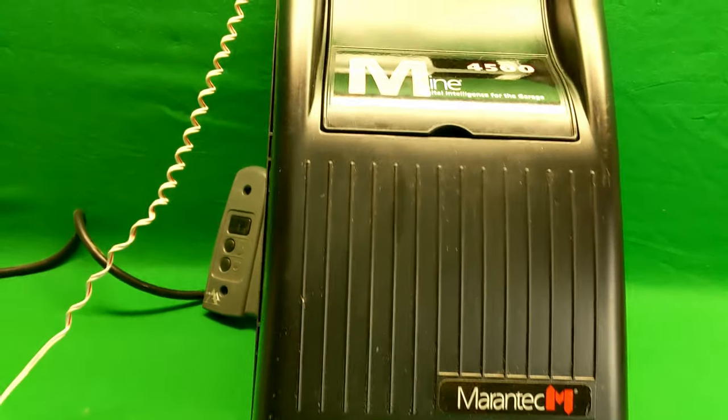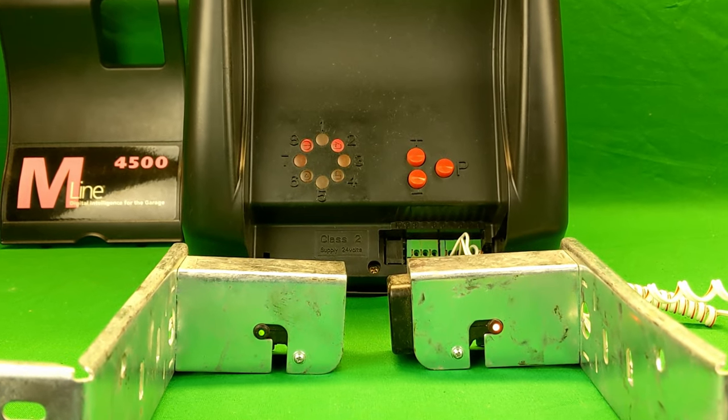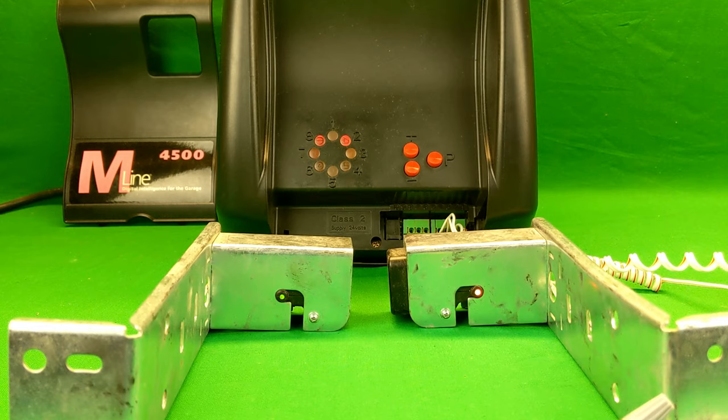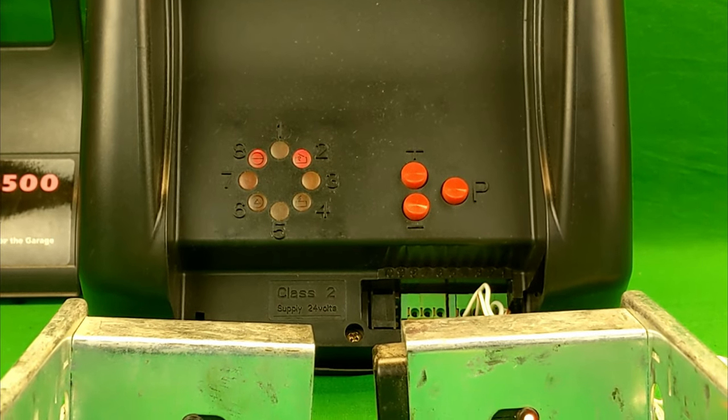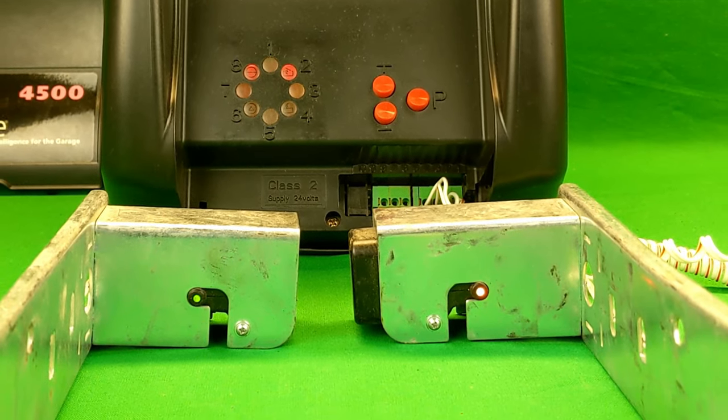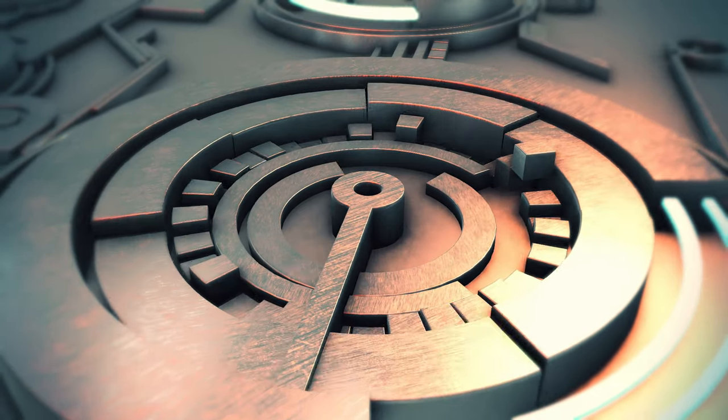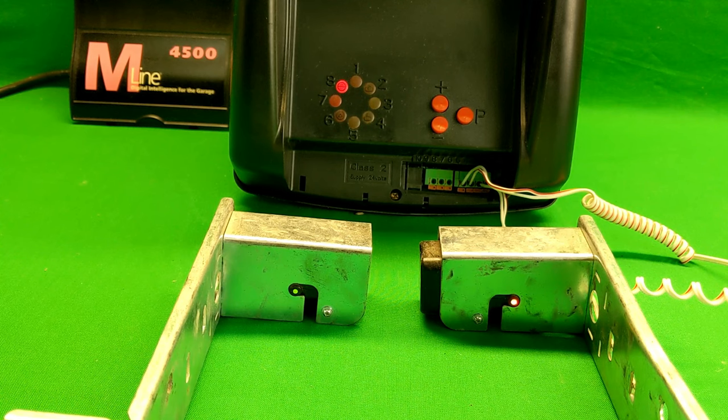Hey, thanks for swinging by the channel. Today we have a Morantek M line 4500. So as you're pulling up to your house, you hit your remote, it opens the door, you pull your car in, you go to hit the remote again or the button on the wall and the door is not closing. This video is going to show you why that possibly could be. Stay tuned.